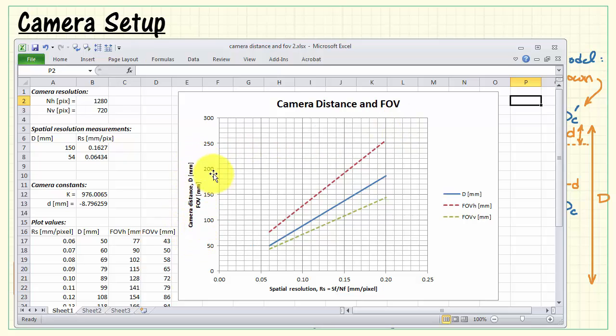Well, let's finish up by taking a look at a plot of camera distance and field of view as a function of spatial resolution. This is based on knowledge of the camera resolution, 1280 by 720. Two or more spatial resolution measurements, and from there you can calculate the camera constant and that little d distance. Here I have the two values, or two measurements that I showed you earlier. That's based on the slope function in Excel, and this is based on the intercept function to get at little d.